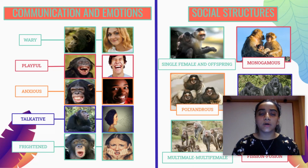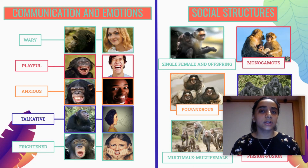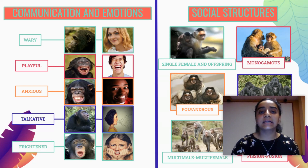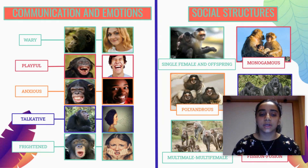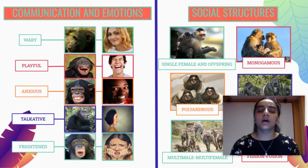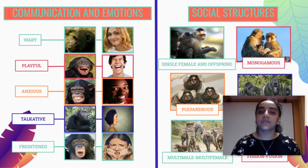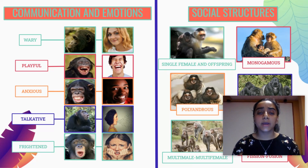Goodall found the social hierarchy was most prevalent during feeding and mating. At a feeding station in her camp, she watched how a youngster named Figan had to wait for Goliath the alpha to finish before grabbing scraps. In mating, superior males got to mate first and most often. She also observed how the hierarchy changed: Goliath's alpha position was usurped when a male named Mike grabbed kerosene cans from Goodall's camp, banged them together to create a racket, and Goliath eventually stepped down.